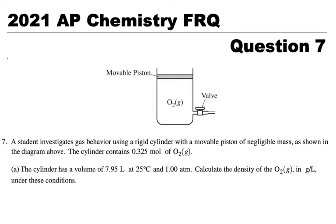A student investigates gas behavior using a rigid container with a movable piston of negligible mass, as shown in the diagram above. The cylinder contains 0.325 moles of oxygen. The cylinder has a volume of 7.95 liters at 25 degrees and 1 atmosphere pressure. Calculate the density of oxygen in grams per liter under these conditions.